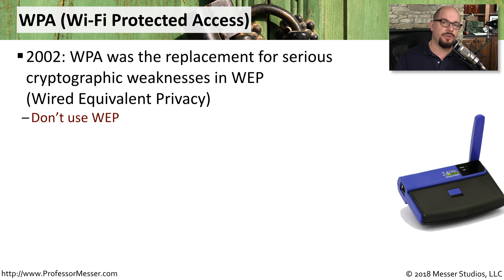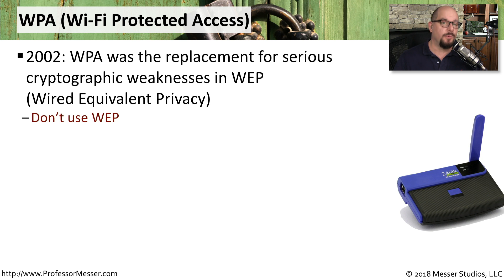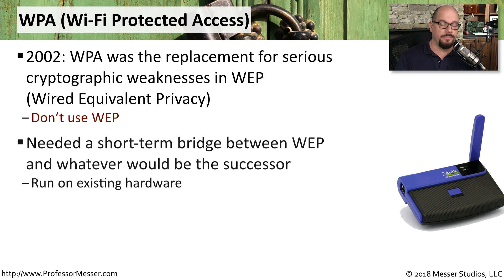One of the very first encryption types we used on wireless networks was WEP. WEP stands for Wired Equivalent Privacy. Unfortunately, in 2002, we found significant cryptographic vulnerabilities with WEP and decided this would not be appropriate to use going forward.